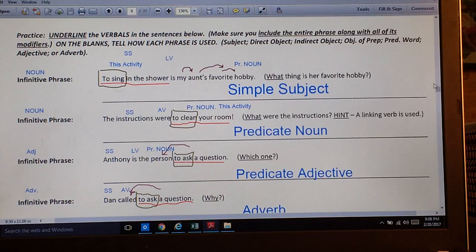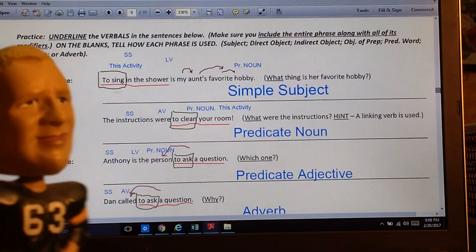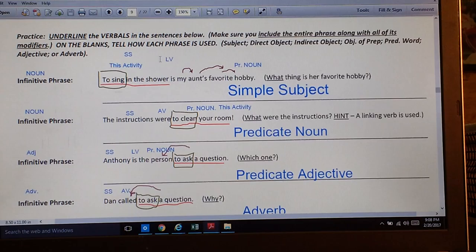The instructions say, practice. Underline the verbals. Mr. Southerton went the extra mile and did a few other things. But you will underline the verbals in the sentences below. You will make sure that you include the entire phrase along with all its modifiers on the blanks. Tell how each phrase is used. So, they could be used. These nouns could be used as subjects, direct objects, indirect objects, objects of the preposition. And, again, we'll see that with the infinitive phrases, which could also be used as adjectives or adverbs.